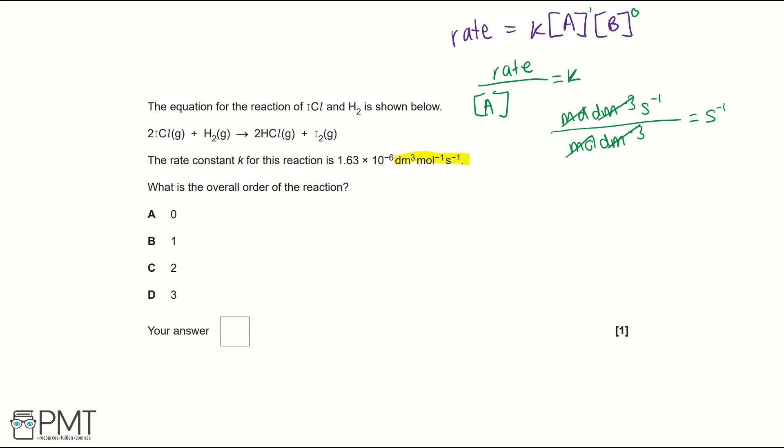In the question, we have decimetres cubed, moles to the minus 1, seconds to the minus 1, so it's not first order. So we can cross out B.